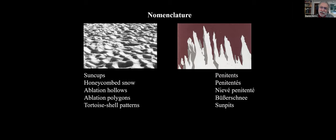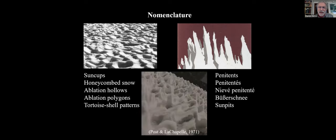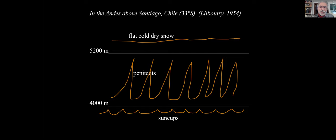On terminology: sun cups are also called honeycomb snow, ablation hollows, or ablation polygons — 'ablation hollows' being non-prejudicial since sometimes these structures can form without the sun — or in Japanese, tortoiseshell patterns. Penitents are also called penitentes. Nievé penitente has been used, but Lliboutry scorns that term as bad Spanish. In German, böse Schnee, because böse actually means penitent. Sun pits emphasizes that the penitents don't grow — it's that the pits get deeper. Lliboutry's description for the mountains above Santiago identifies three altitude zones in summer: below 4,000 meters sun cups, above 5,200 meters flat cold dry snow, and in between the penitents.